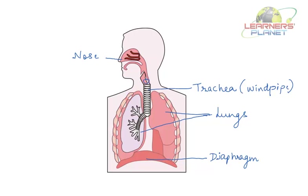To keep our lungs healthy, we also need to exercise them. Exercise is good for every part of our body, and especially for our lungs and heart. When we take part in vigorous exercise like biking, running, or swimming, our lungs require more air to supply the extra oxygen we need. As we breathe more deeply and take in more air, our lungs become stronger and better at supplying our body with the air it needs.